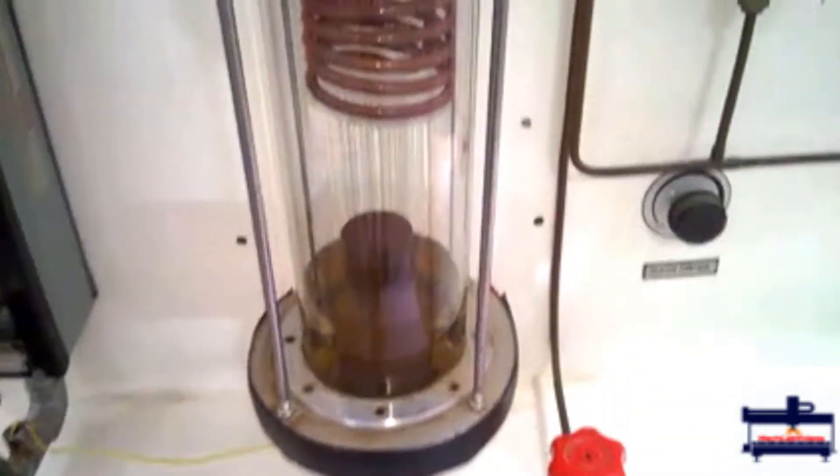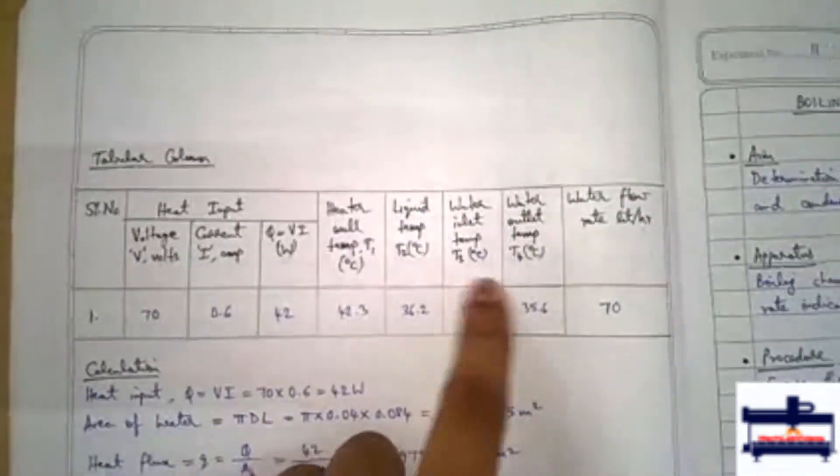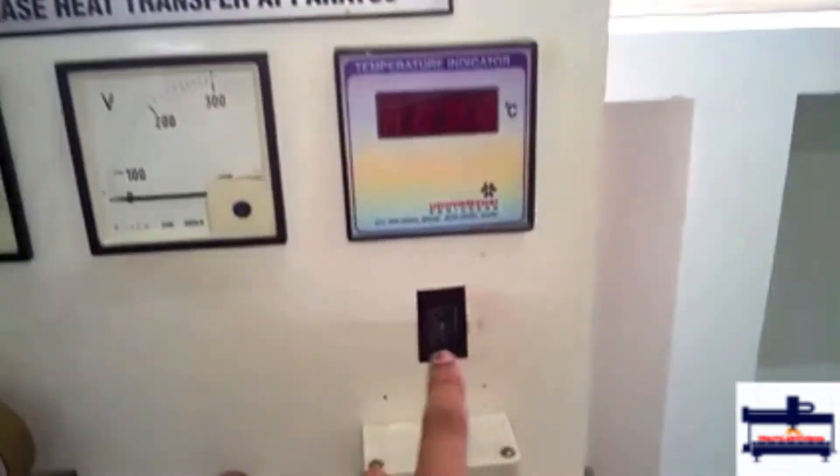q equal to Vi. Then the heater wall temperature, the liquid temperature T1, T2, water inlet temperature, and water outlet temperatures are measured from this meter on this side by changing the temperatures here.